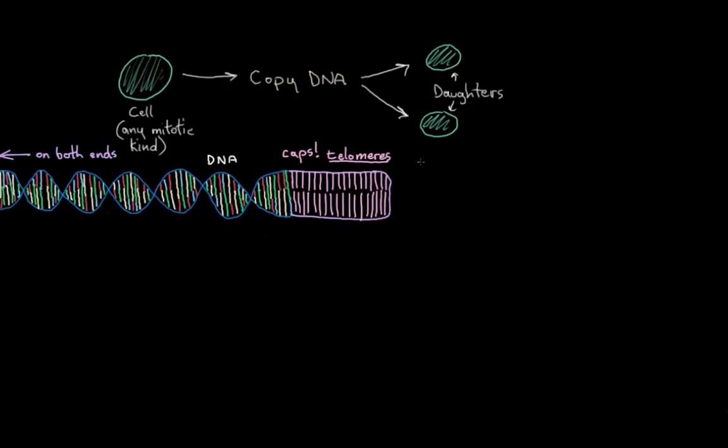our telomeres prevent damage from happening to our DNA during the copying process. These telomeres at the ends don't actually code for any proteins. They don't have any genes on them. All the important DNA is in this middle section.